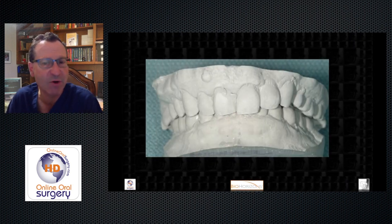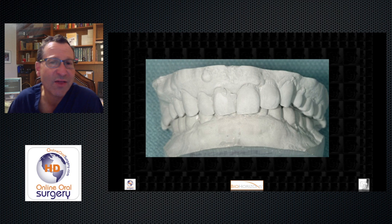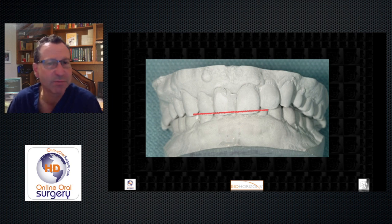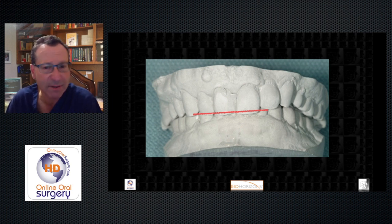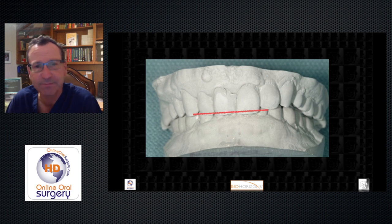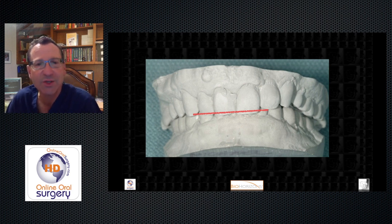This patient had a deep overbite and we knew the dentist was not going to restore him in that overbite — he'd level out the occlusal plane. I asked the dentist to do a wax-up and send me surgical guides so I could know where those anterior maxillary teeth were going to be post-restoratively, so I could place the implants in the right sites and positions.